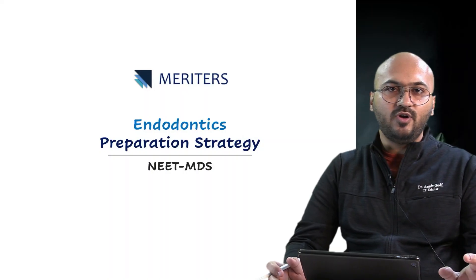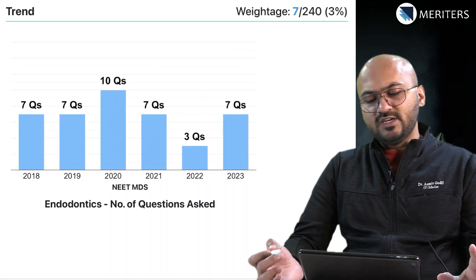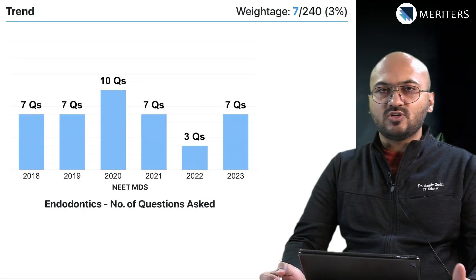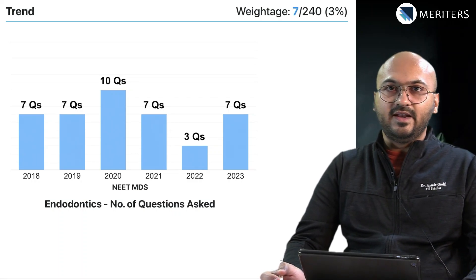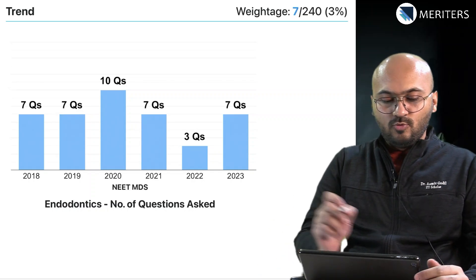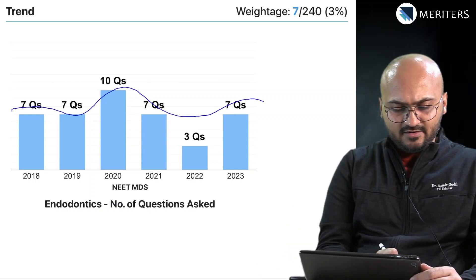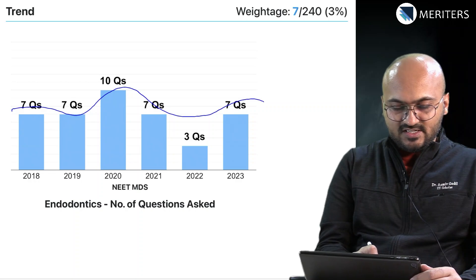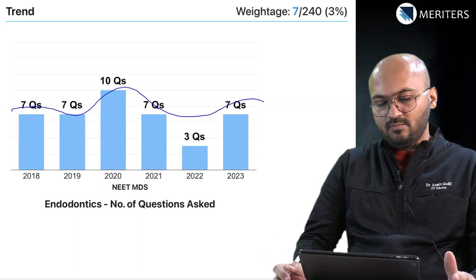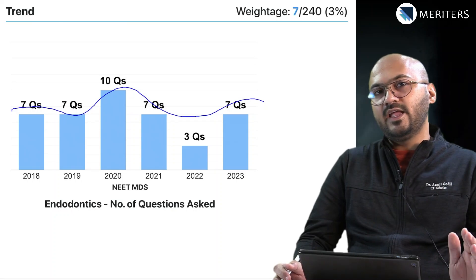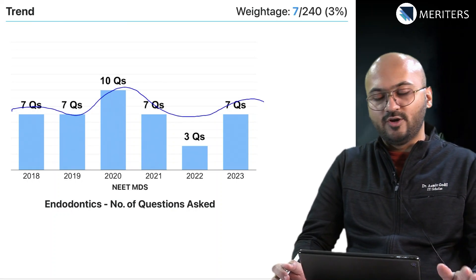The essence of endo — from diagnosis to biomechanical preparation, access cavity, obturation, and follow-up — has to be covered. Endo is as important as conservative dentistry when it comes to weightage in the NEET MDS exam. More or less seven questions are expected, and on average 28 marks is what you can score if you are correctly answering all your endo questions.